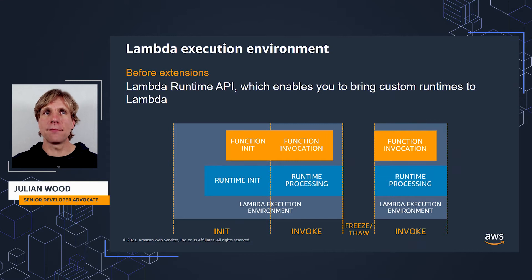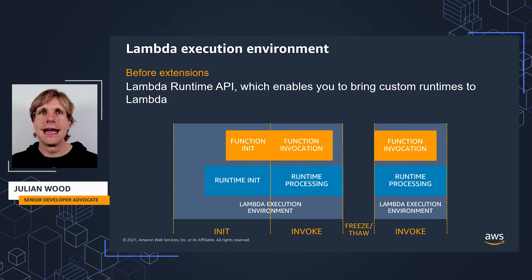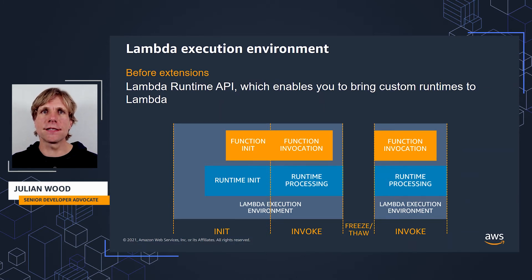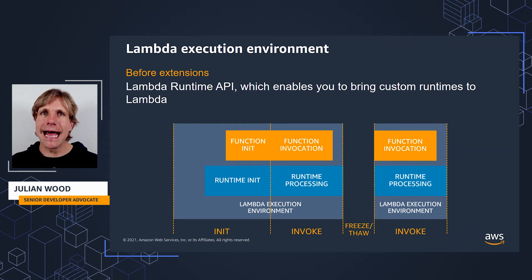I'm going to go through the timeline of how the Runtime and function interact, which runs from left to right. Lambda initializes the Runtime, which then runs the function initialization code — the code outside the handler. This is the cold start. During an invocation, the Runtime manages the function invocation and the function handler code runs, handling the communication between Lambda and the function.